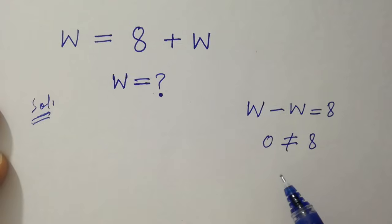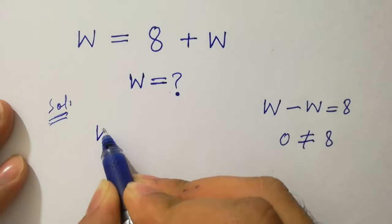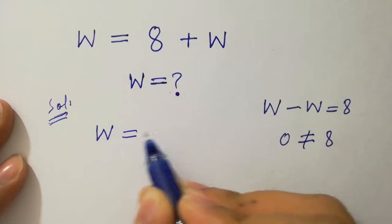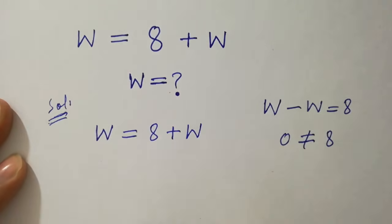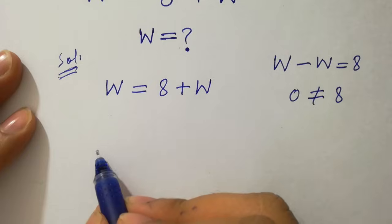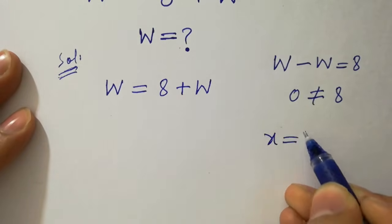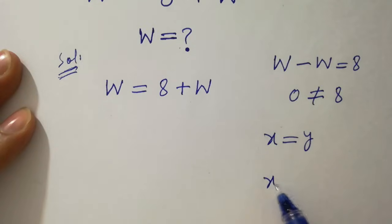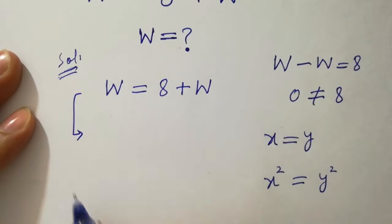Let's try another method to solve this problem. W equals to 8 plus w. As we know, x equals to y, then x square equals to y square. So we can take square on both sides.